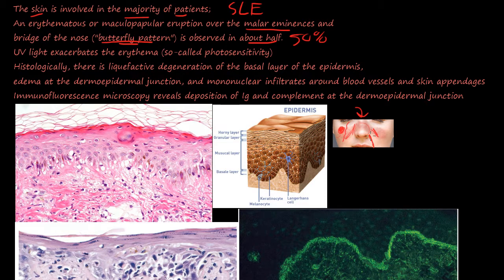If you do a big smile, your cheeks kind of puff out — that's the nasolabial fold. UV light exacerbates the erythema, so-called photosensitivity. When you go out in the sun, there's increased redness in the areas where the sun hits. UV light exacerbates that.